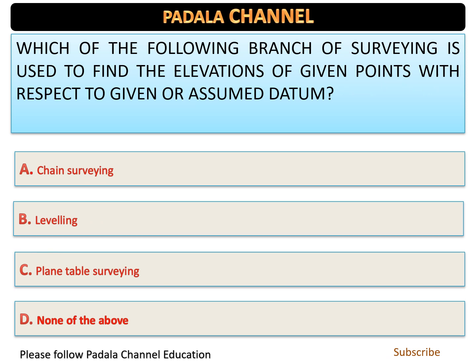Which of the following branch of surveying is used to find the elevations of given points with respect to a given or assumed datum? The correct answer is option B — leveling.